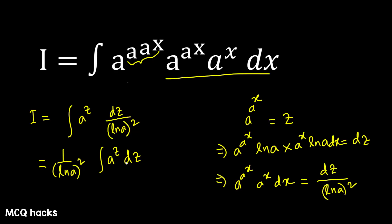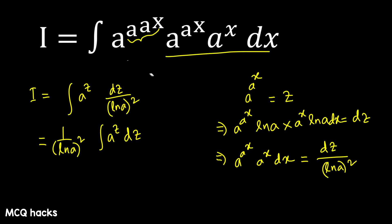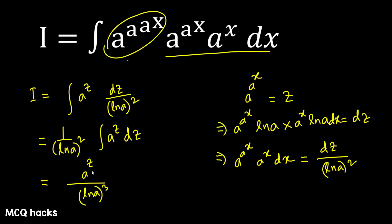Now the integration of a to the power z — let's recall the formula: a to the power z divided by ln a. So our final answer is: a to the power z divided by ln a whole cube. So a to the power z — substitute back the value. The genus comes back. a to the power z divided by ln a to the power n.